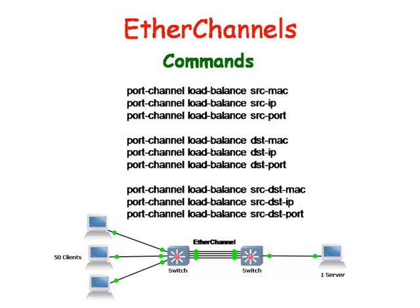In the picture below, we can view two switches connected by an Ethernet link. When choosing a method for load balancing, it is important to consider the range of IP addresses or MAC addresses that you will be using. The Ethernet line used to connect the switches is based upon a hash value that is computed from these factors.